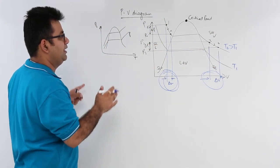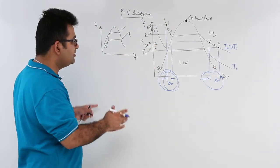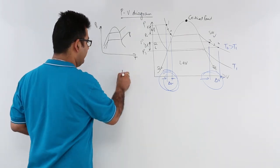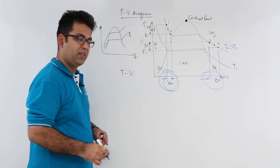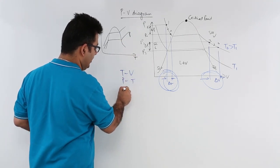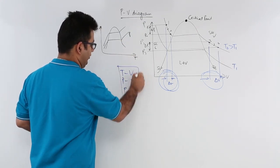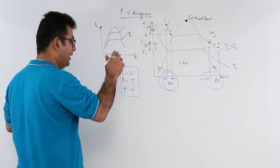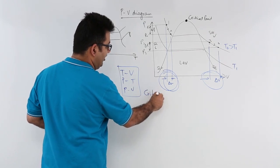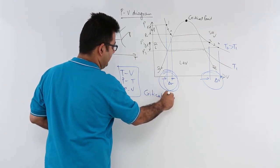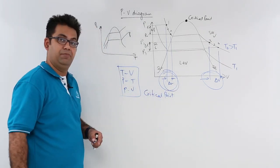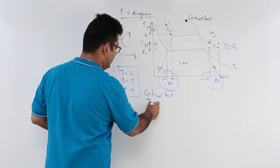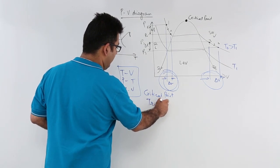This is what the PV diagram tells us. We have now covered all three important plots: the TV plot, the PT plot, and the PV plot. After understanding these three plots, we will discuss two very important points discovered in them — the critical point and the triple point.